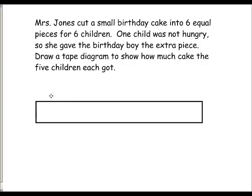The first thing we're going to do is go back to a number bond. A number bond is a part-whole relationship. We're going to show that there are six out of six pieces in the birthday cake. So the birthday cake is cut into six pieces. Then we're going to fan off the five children: one, two, three, four, five.